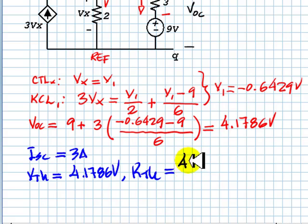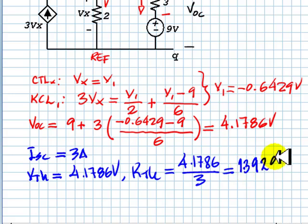And our Thevenin resistance is VOC divided by Isc: 4.1786 divided by 3 amps, which is 1.3929 ohms.